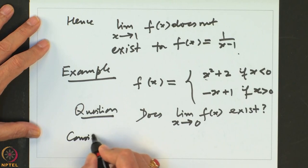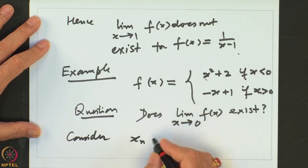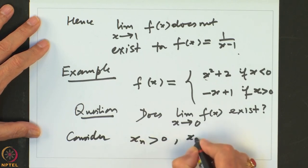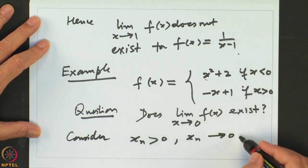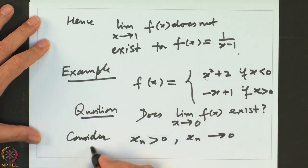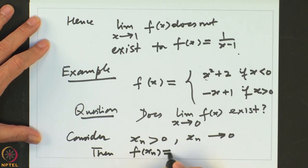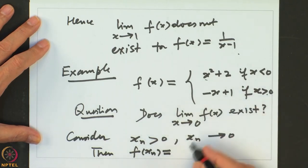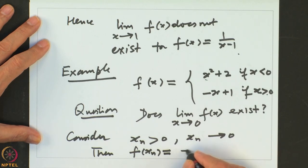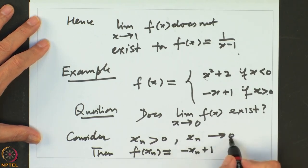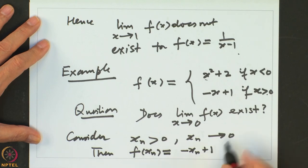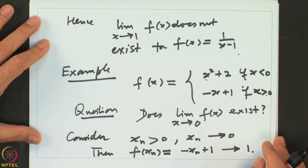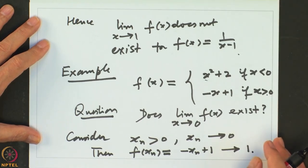Consider xn greater than 0 and xn converging to 0. When xn is bigger than 0, F is defined by the formula minus x plus 1. So F(xn) equals minus xn plus 1 for every n. As xn goes to 0, by the limit theorems on sequences, minus xn goes to 0, so minus xn plus 1 goes to 1. This value is equal to 1.